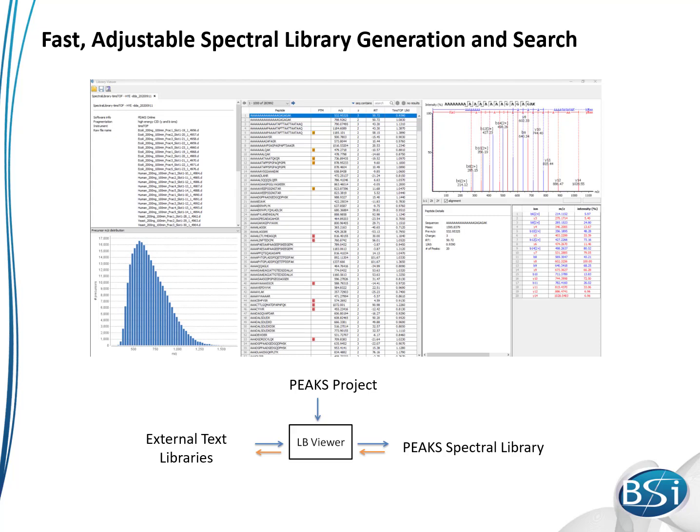Your text format library can then be inspected in our new library viewer. From this page, you can see statistics about your library, library peptides, matched ions, and the annotated library spectrum. Then, different text format libraries can be saved as Peaks libraries for ease of use within Peaks Studio or Peaks Online.